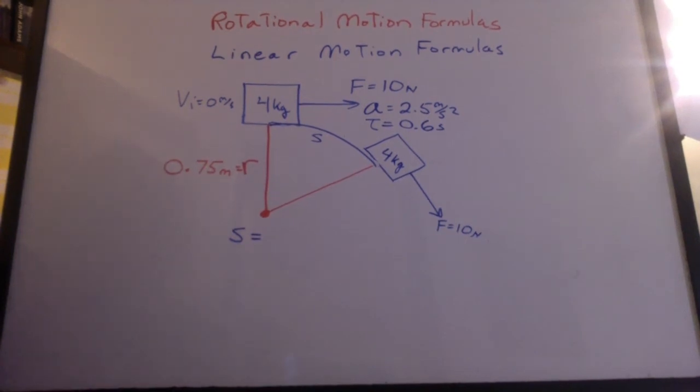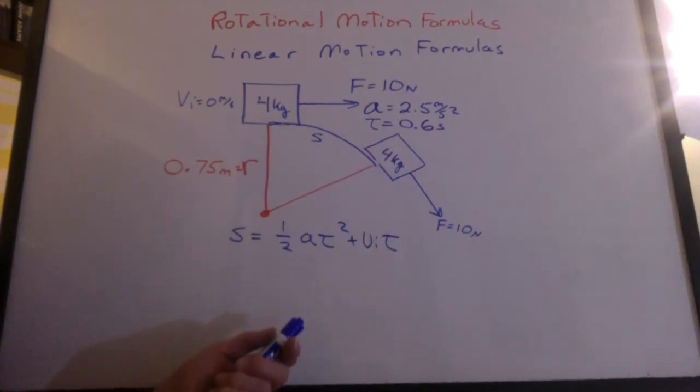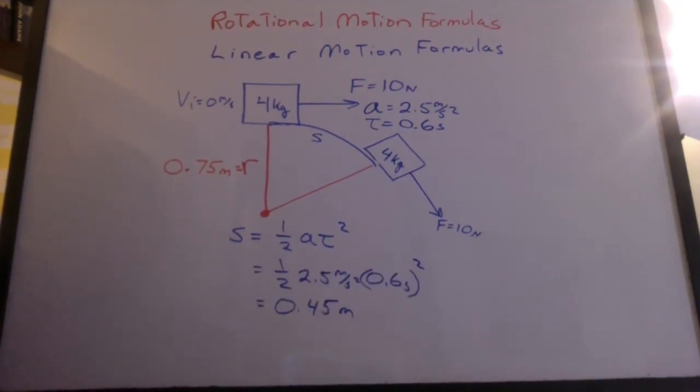Do you remember a formula for the distance traveled if you're accelerating? Doesn't that look familiar? The initial velocity was zero. Plug in your data. The arc length is 0.45 meters.